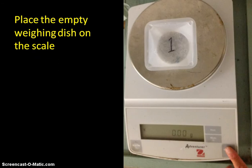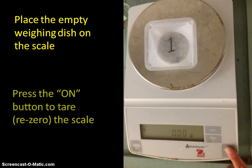To find the mass, place the empty weighing dish on the scale. Press the on button to tare the scale. Tare means to re-zero the scale so that the weighing dish does not factor into the mass of your metal sample.